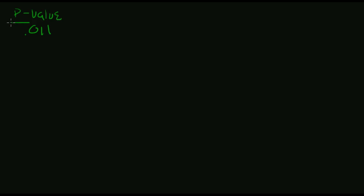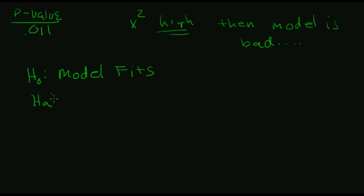So what does this mean? If my chi-squared number is high, then the model is bad. If the chi-squared number is low, then the model is good. So let's say my null hypothesis, then, should be model fits. My alternate hypothesis here is that the model doesn't fit.